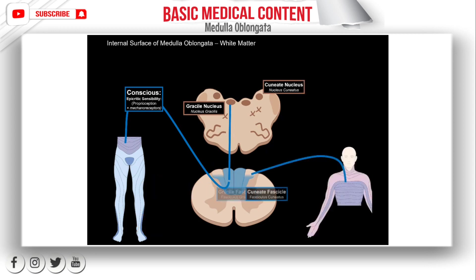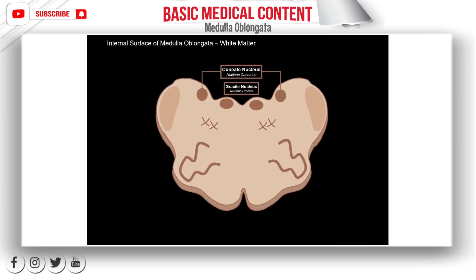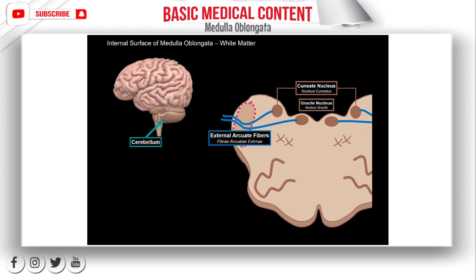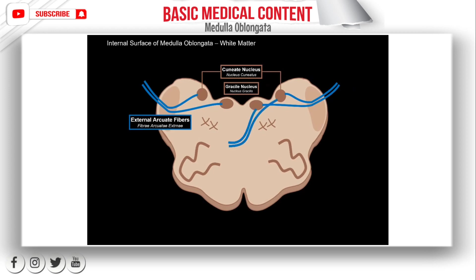The cuneate nucleus receives input from the upper part of the body, also sensing epicritic sensibility. From the gracile nucleus and the cuneate nucleus, the fibers split into two pathways. They split into fibers that go through the inferior cerebellar peduncles — called the external arcuate fibers — going to the cerebellum. We also have internal arcuate fibers that cross over to the other side, and since they both cross, they decussate to form the decussation of the lemnisci.